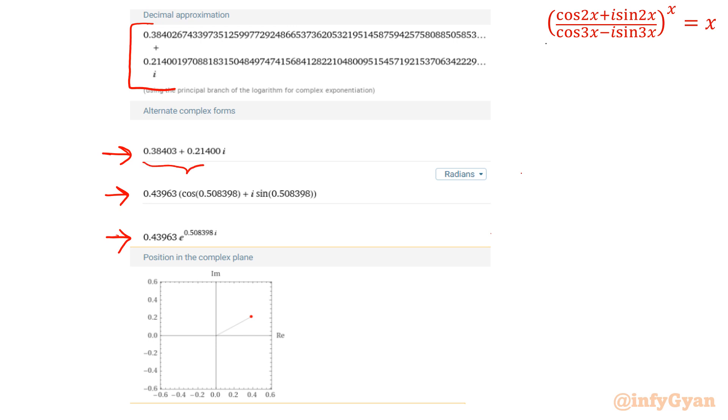a plus ib is given. Under the root a square plus b square is 0.43963. And this is theta equal to tan inverse 0.214 over 0.384. From there we can get this form. And polar form is r e raised to the power i theta. That theta is same, and this value is same. This is your modulus r.